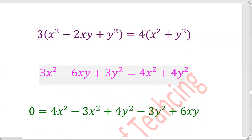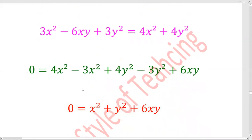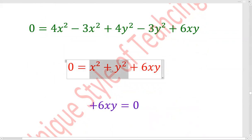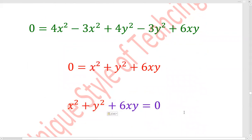Now I will shift 3x square to the other side. 4x square minus 3x square gives x square. Similarly, 4y square minus 3y square gives y square. And minus 6xy shifted becomes plus 6xy. So we get x square plus y square plus 6xy is equal to 0.